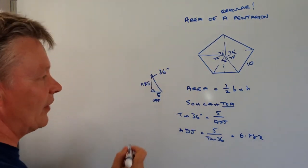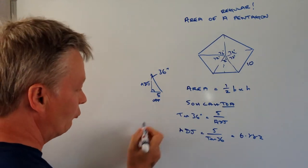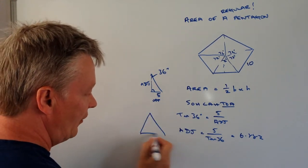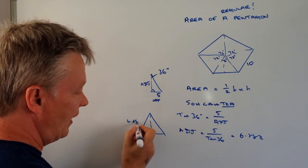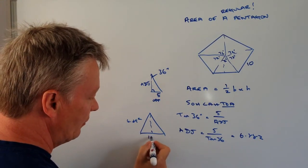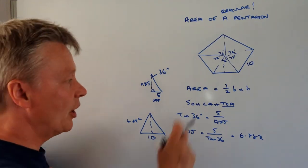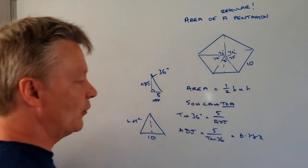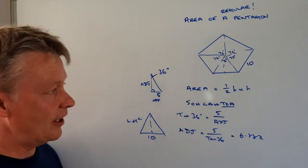Okay, that tells me then that the actual height of one of these triangles. So now if I redraw this triangle, the height is going to be 6.882 and the base is going to be 10. Okay, so now I'm in a position where I can go back to using this formula, which is area equals a half base times height.